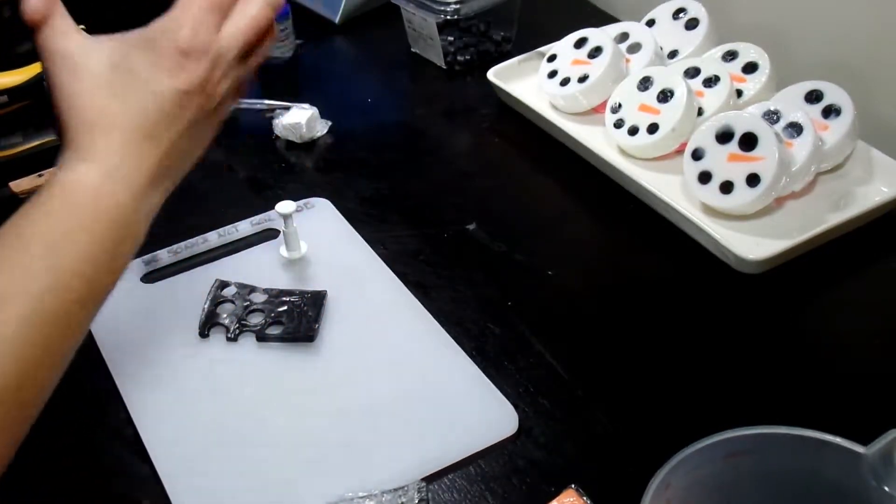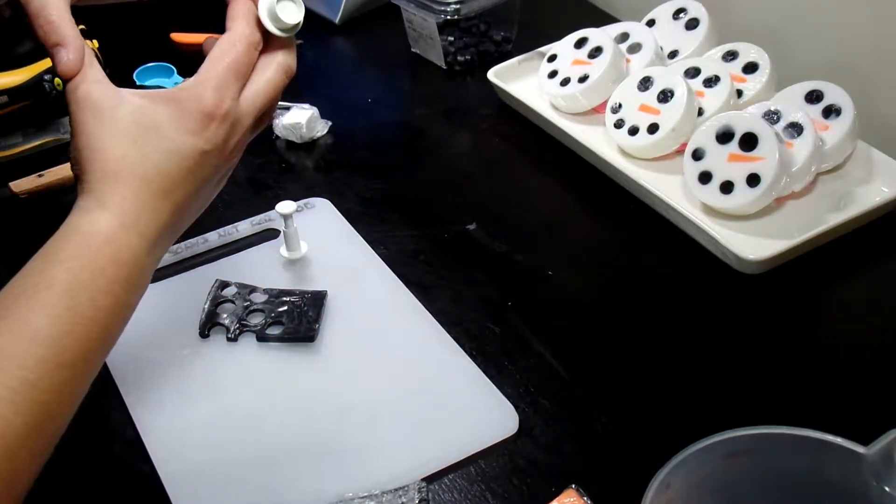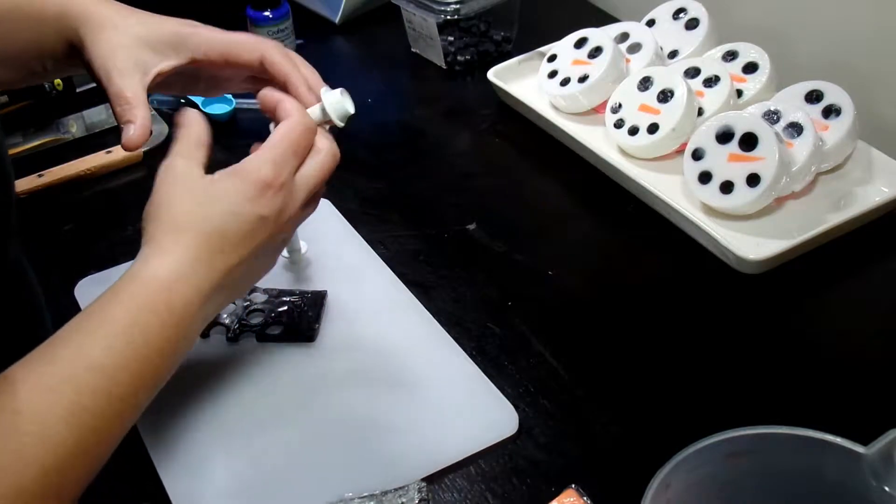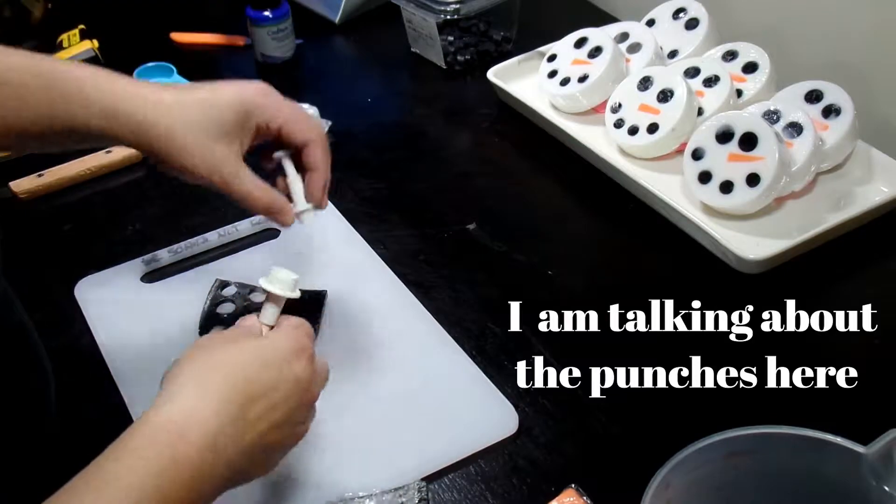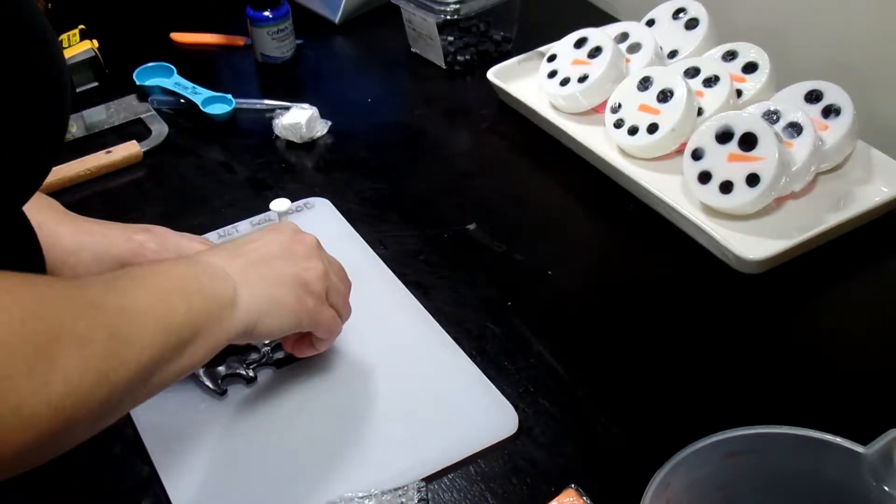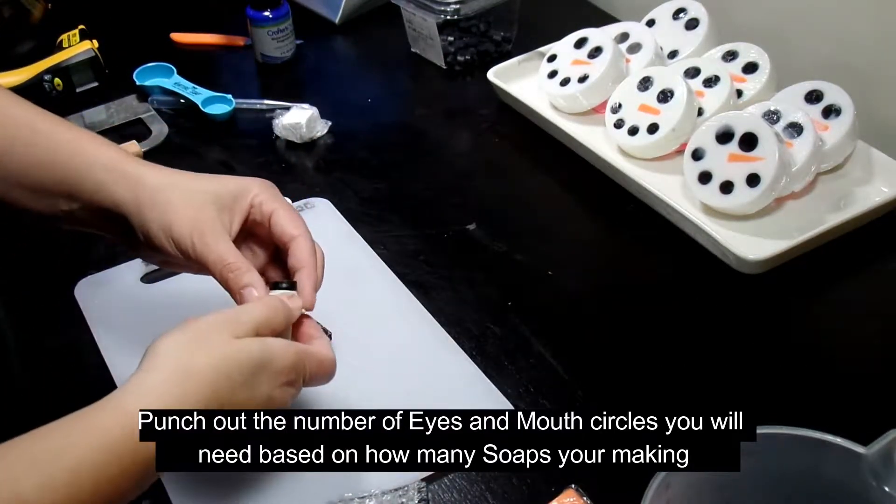This is a medium circle. Depending on the size of your circle, the diameter of the actual soap that you're making will depend on what size circle you use.